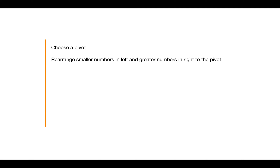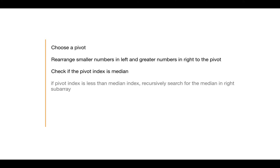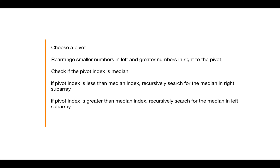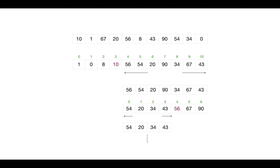There's another solution with O(n) complexity based on the quicksort algorithm. What we do is choose a pivot element, rearrange the numbers exactly like in quicksort, and return the pivot index. We then check if that index is the middle index — if so, we've found the median. If the pivot index is less than the median index, we recursively search the right subarray; if greater, we search the left subarray.